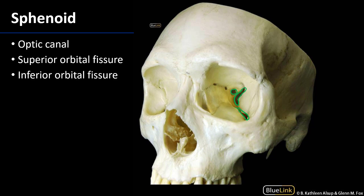The inferior orbital fissure is a means of conveyance between the orbit and the pterygopalatine fossa, and this allows for branches of V2 — the maxillary division of the trigeminal nerve — to traverse the orbit.